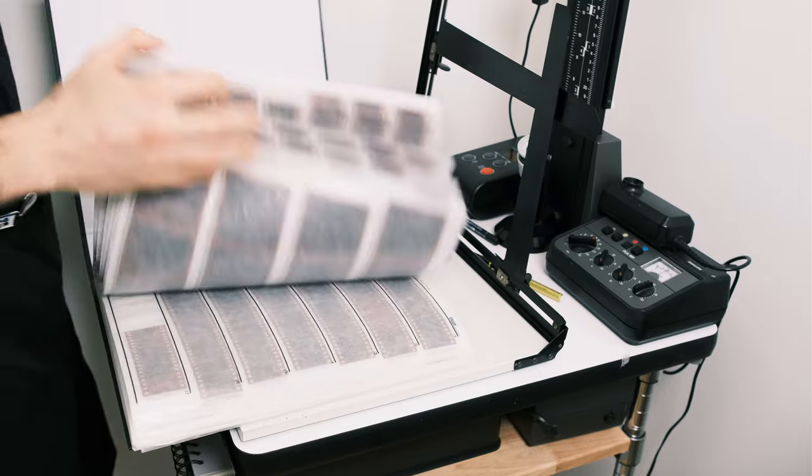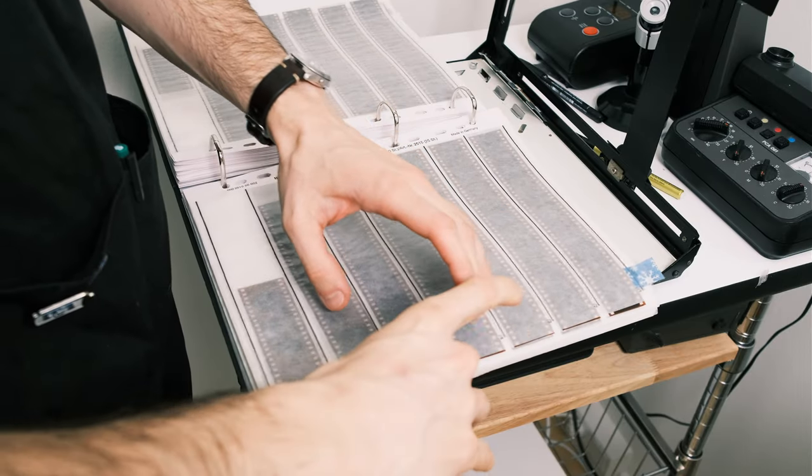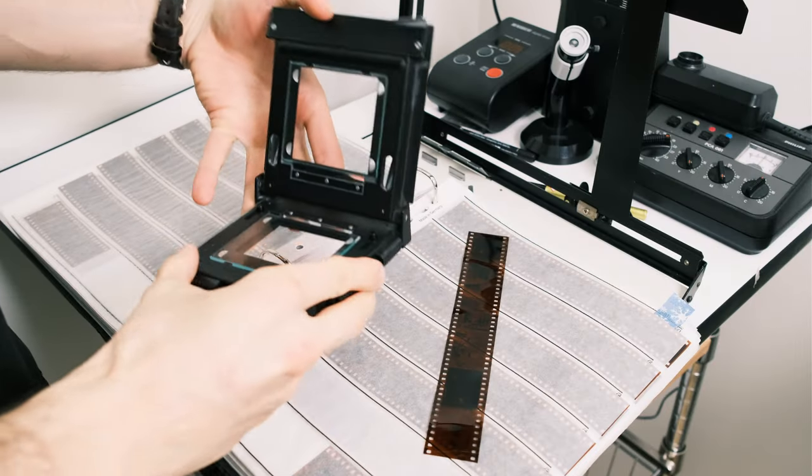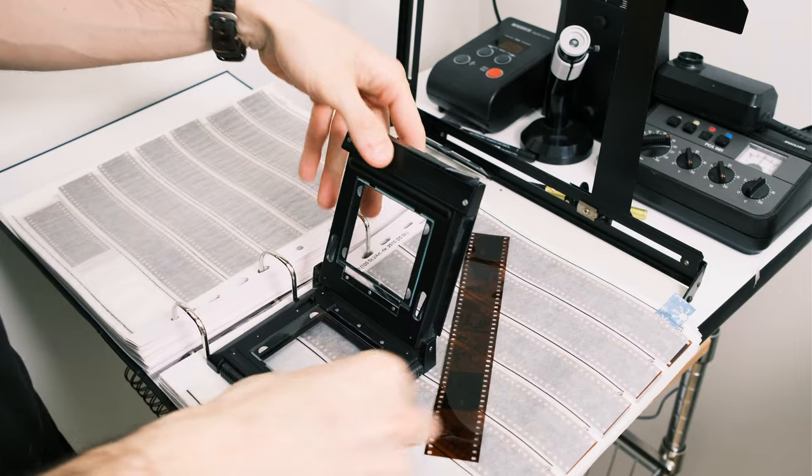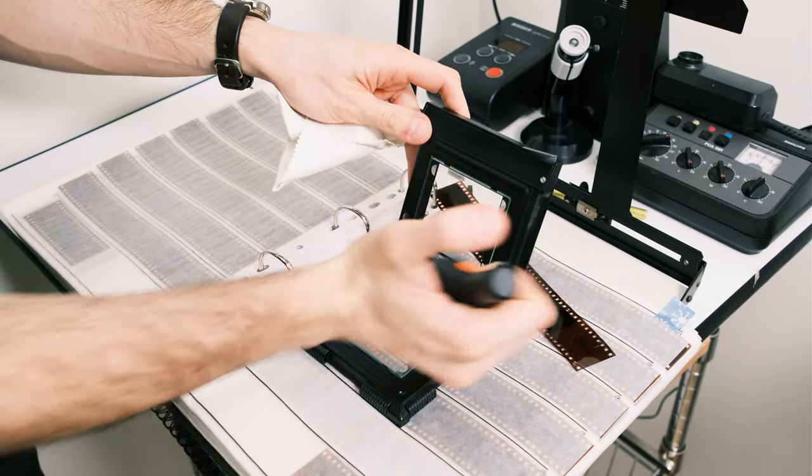For today I have a print from the summer and this print is from Kodak 200 which I developed in the mass batch development last time. Because it's 35mm film I need to adjust my frames and I also need to change the lens.